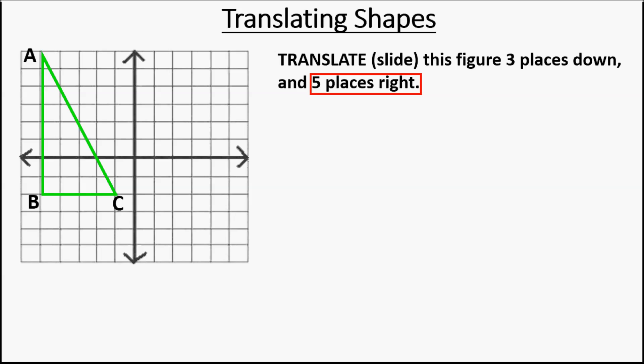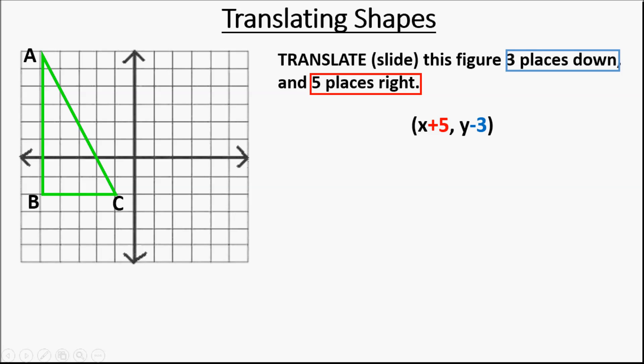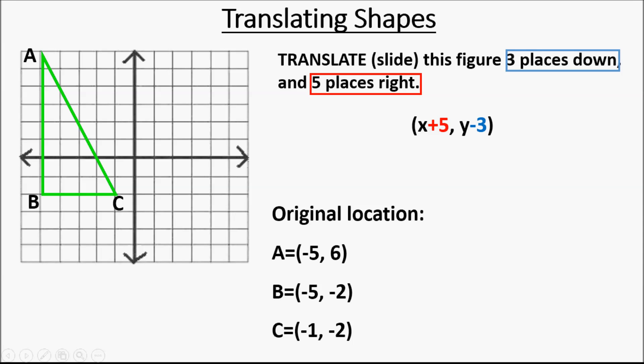Five places right means it's a change in the x-value, and moving right is a positive direction, so we have x plus five — all of our x-values are going to increase by five. And then three places down means we are going to subtract three from all the y-values. We take all of our original values for the vertices of our triangle. Point A was at negative five, six. Point B was at negative five, negative two. C was at negative one, negative two. All of those x-values we add five to, and all of those y-values we subtract three from.